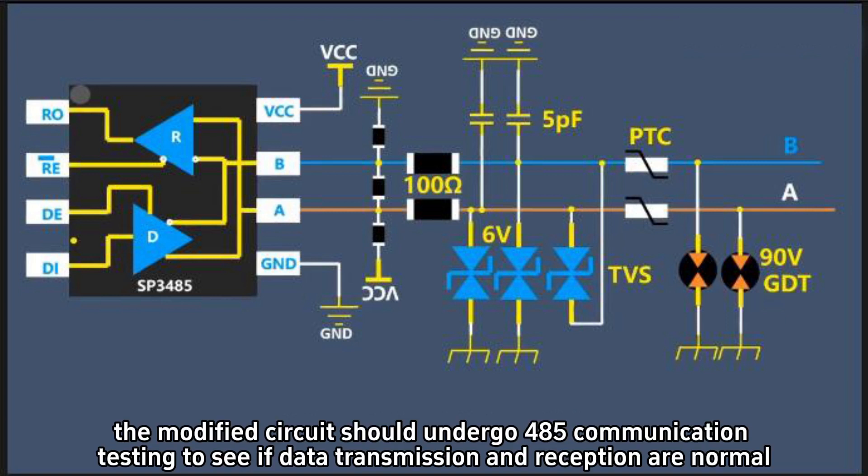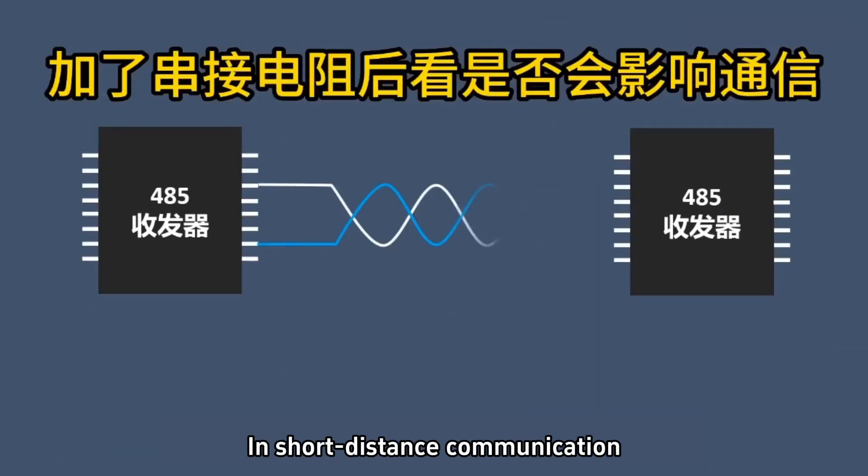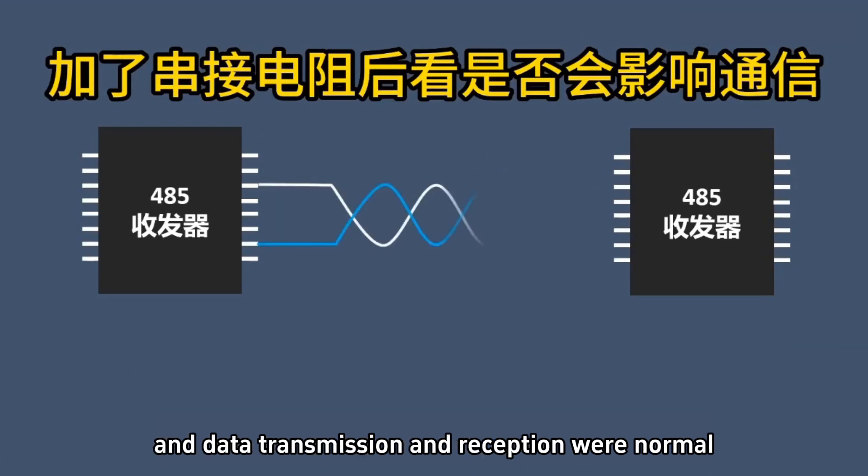First, the modified circuit should undergo 485 communication testing to see if data transmission and reception are normal. In short-distance communication, it was found that communication was normal, and data transmission and reception were normal.